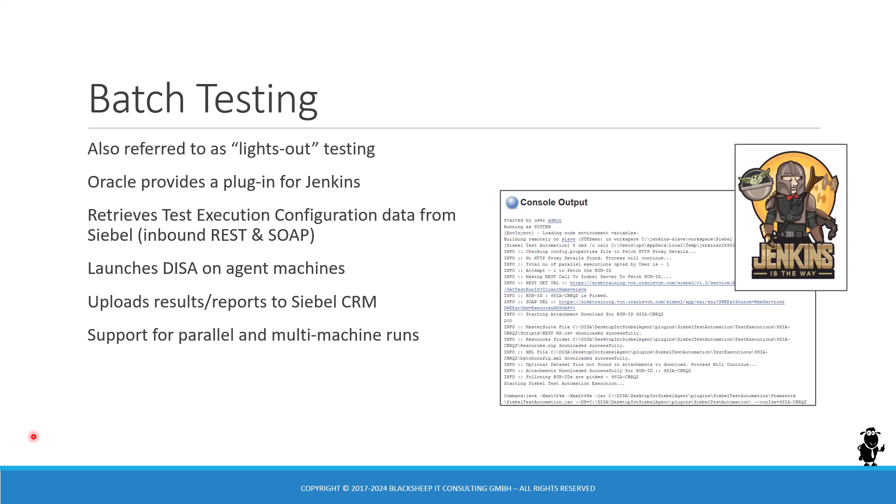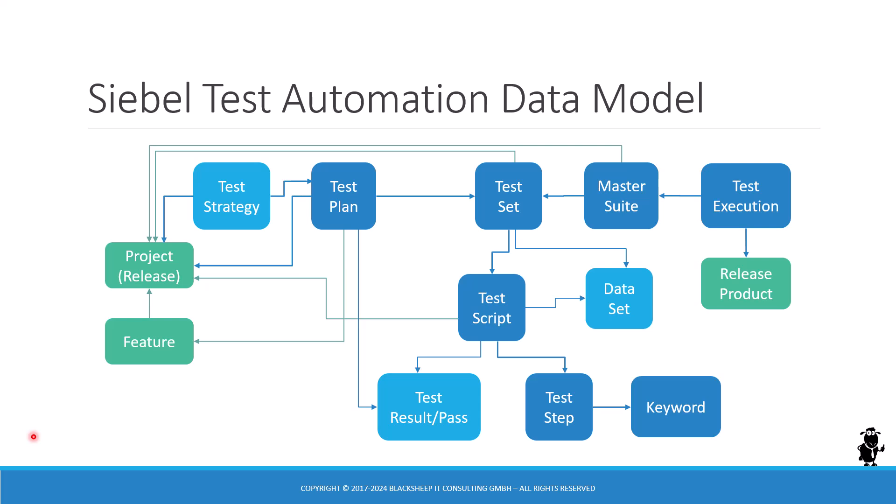A major part of the class is about setting up and using Jenkins for executing test executions in batch or lights-out testing. We will have a lot of things to talk about regarding Jenkins, the setup of test executions, master suites, test sets, and test plans.